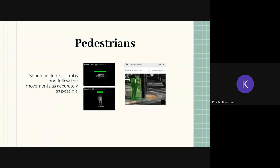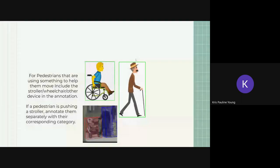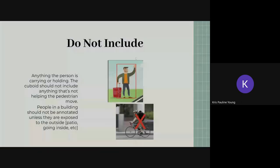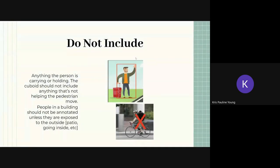How to annotate some of these objects. For pedestrians, we want to include the arms and the legs, that's the important part here. If a pedestrian is kind of like holding something, if you can exclude that, that'd be great. If you can't, then that's fine as well. Just make sure that the limbs are all correctly positioned.